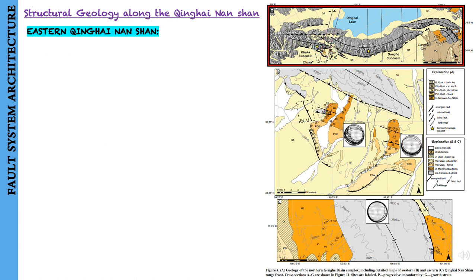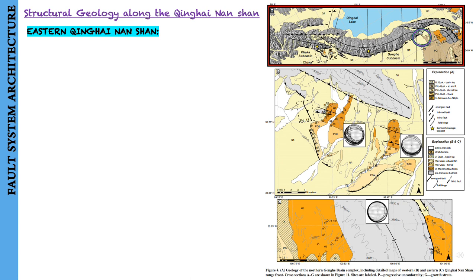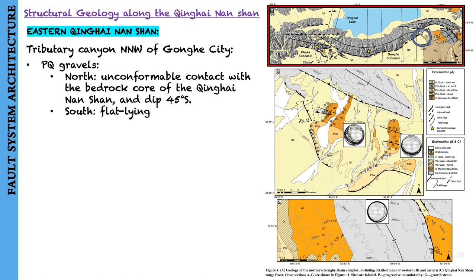A second exposure of continuous section exists within the Yellow River Canyon along the flanks of the far eastern Qinghai-Nanshan near Gonghe city. In a tributary canyon north-northwest of Gonghe city, PQ gravels are in unconformable contact with the bedrock core of the Qinghai-Nanshan and dip 45 degrees south. To the south, the PQAL strata are flat-lying.